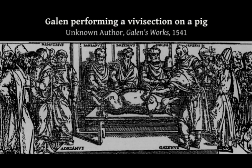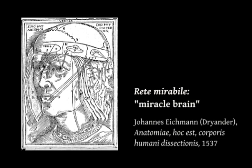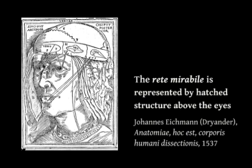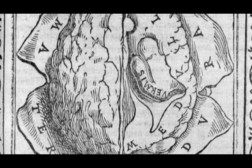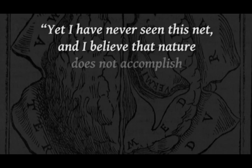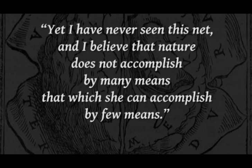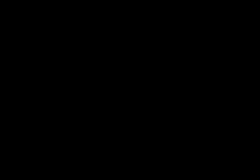Let's make one example. For centuries, medical authors, invoking Galen who first described it, had confirmed the existence of an anatomical structure called the Rete Mirabile — a sort of network of small vessels that had the task of refining the animal spirits going up to the brain, communicating the physical sensations which had to be elaborated by the intellectual faculties. Berengario dismissed it with a few simple words, and I quote from the Isagoge: 'Yet I have never seen this net, and I believe that nature does not accomplish by many means that which she can accomplish by few means.' Observation and an economy principle beat medical tradition.